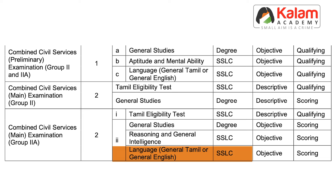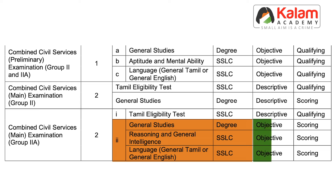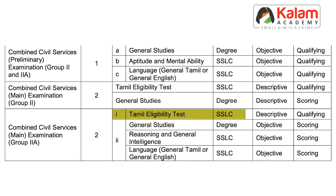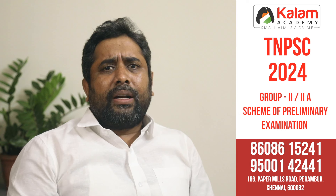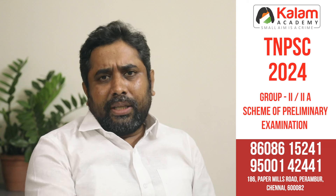For Group 2A, the exam pattern in the preliminary has General Tamil or General English with 100 questions, plus General Studies questions. Group 2A is objective type — options A, B, C, D. Unlike the preliminary, there is also a Tamil eligibility paper which is descriptive, but it is compulsory. Tamil eligibility is very easy and acts as a filter.